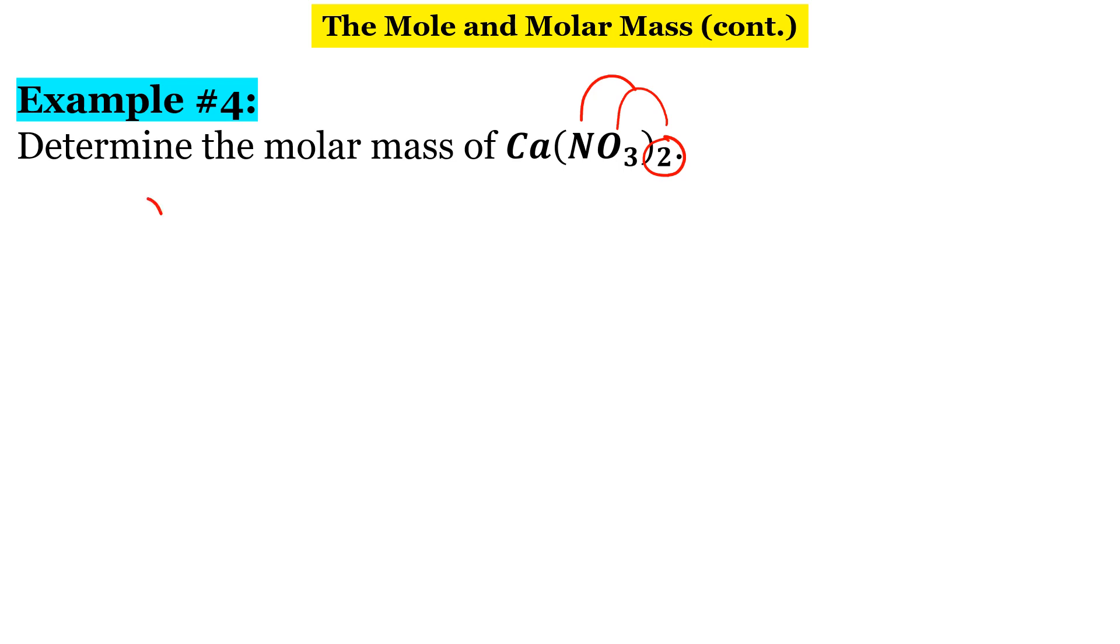So, let's write out what we have. For calcium, there's only one of them. Calcium's molar mass is 40.08 grams per mole.